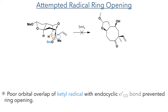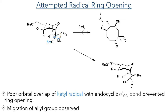At this point of the synthesis, the authors wished to cleave the trans-annular ether bond to form the eight-membered ring. They attempted this using samarium diiodide, which has previously been reported in the literature to be successful for these kinds of transformations. However, these attempts were unsuccessful, which they attribute to the poor orbital overlap of the ketal radical with the endocyclic carbon-oxygen antibonding orbital necessary for the fragmentation to occur. Instead, they observed the reduction of the ketone to an alcohol and the migration of the vinyl group, indicating better orbital overlap between the ketal radical and the carbon-carbon bond.